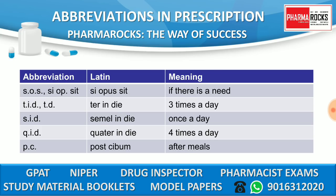SOS means 'si opus sit,' meaning if there is a need or if necessary. TID means 'ter in die' — T for ter, I for in, D for die — meaning three times a day. SID means 'semel in die,' meaning once a day. QID means 'quarter in die,' meaning four times a day. PC means 'post cibum,' meaning after meals. These five abbreviations are very important and frequently asked in competitive exams.